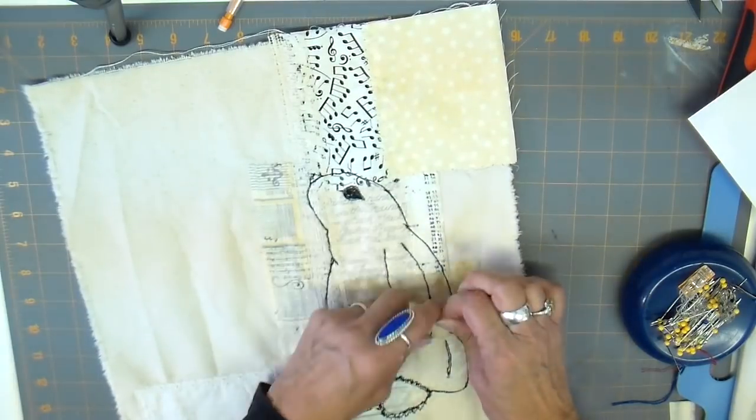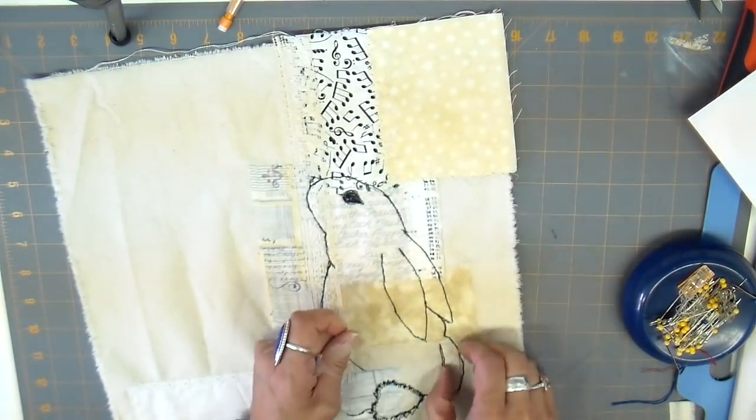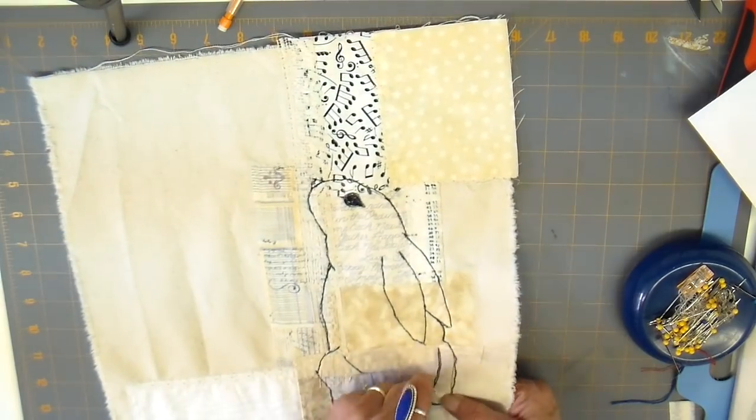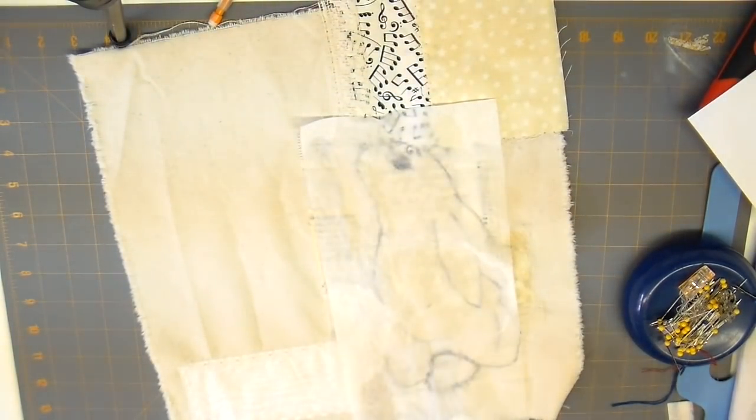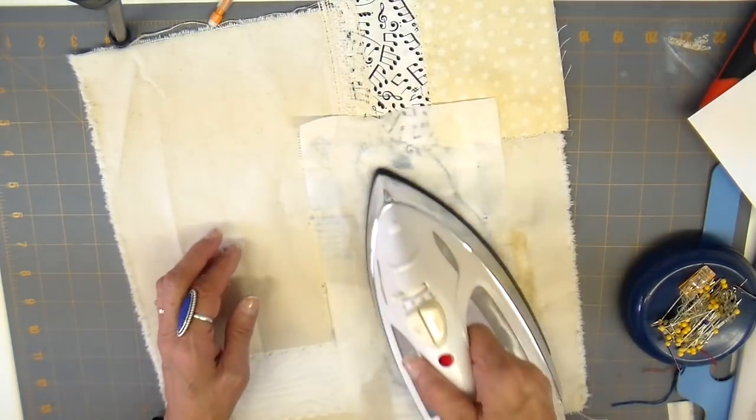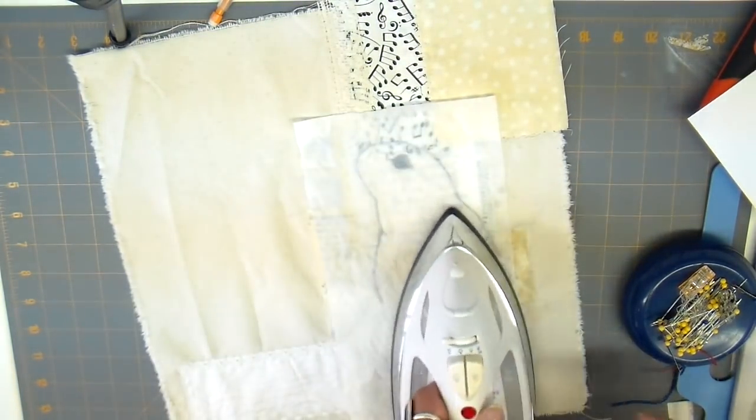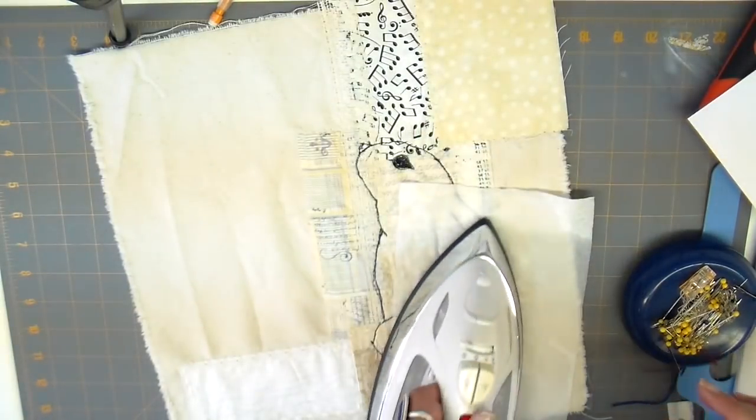Now I'm removing my stabilizer, just carefully. It'll just carefully remove it and anything that's left, I just added a paper towel that's damp and just going to be ironing that and the rest of that Sulky will come off.